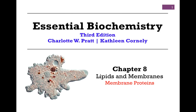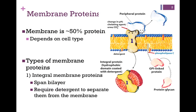We're continuing our studies of Chapter 8, Lipids and Membranes, and in this lesson we want to start to look at membrane proteins. We find that for most cell types, the membrane is about half protein by mass, although this can depend on the cell type. So let's look at the types of membrane proteins that we find.